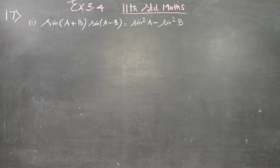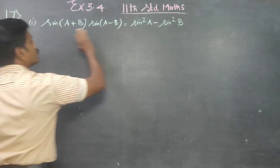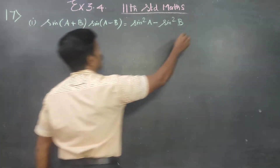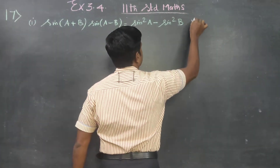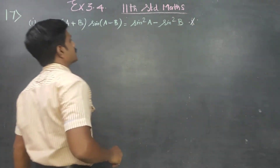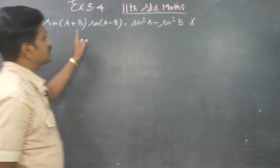Class 11 standard students, exercise number 3.4, sum number 1. We must prove this — this is a very, very important formula. This will be required in future exercises also. Very important formula.